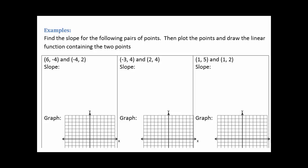Okay. So for each of the following examples, we're going to take the two points we're given. We're going to use the slope formula to find the slope. Then we're going to plot the points and draw the line that contains those two points. So find the slope first, then find the line.